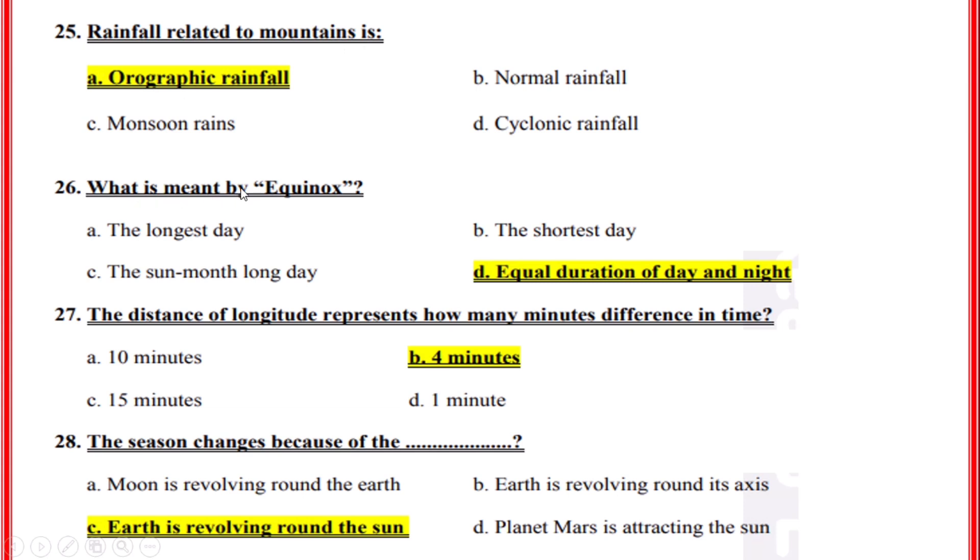What is meant by equinox? Correct option: D, Equal duration of day and night. The distance of one degree longitude represents how many minutes difference in time? Correct option: B, 4 minutes.